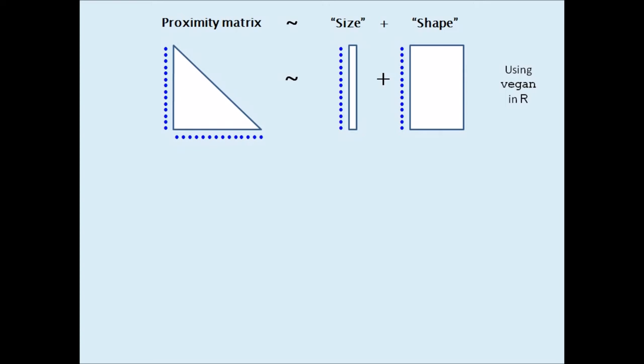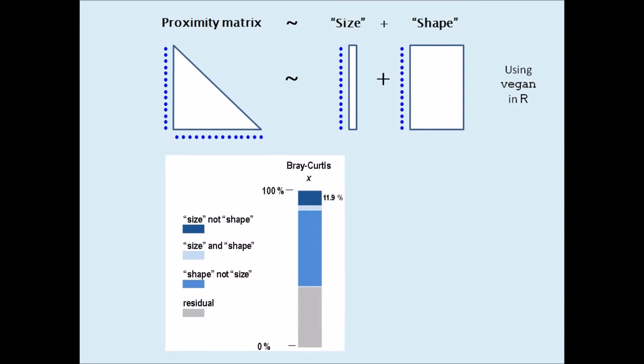For example, using a data set of fish counts at sampling points across the Barents Sea, here are the estimated components summing to 100% of the Bray-Curtis dissimilarity applied to the original abundance counts.